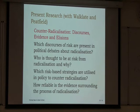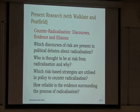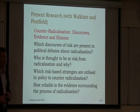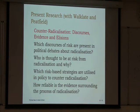Some fairly foundational questions at the level of risk: which discourses of risk are present and indeed absent in political accounts of radicalization? Who is thought to be at risk and vulnerable to radicalization, and why? What are the risk-based strategies used in policy to counter radicalization, and what is the evidential basis? How reliable is the evidence being used? These seem like basic questions you would think would be asked before policy was set. But it seems quite the opposite — policy is set, and then there's an attempt to retro-engineer the evidence to fit.